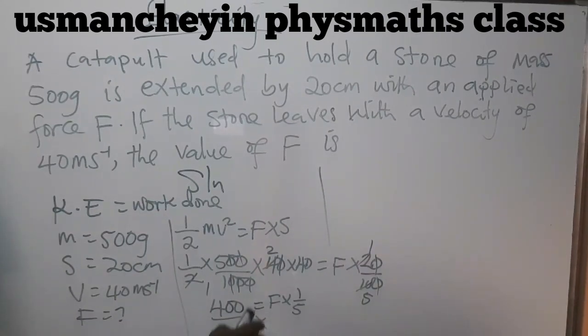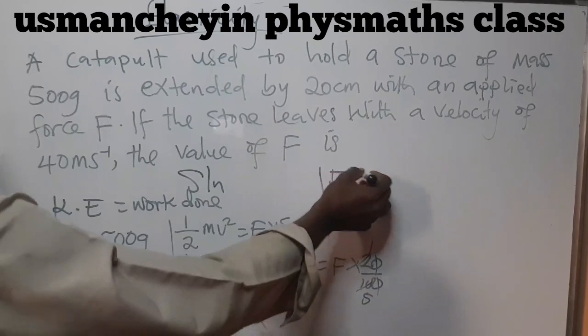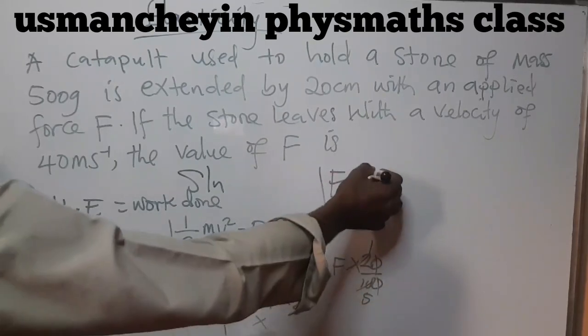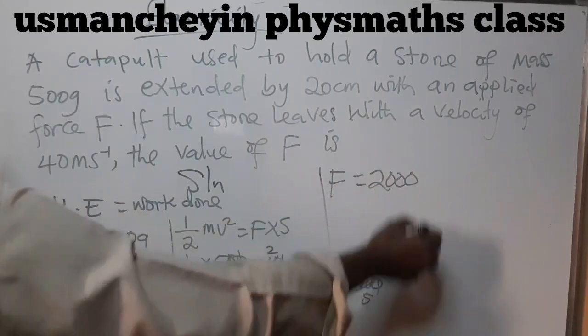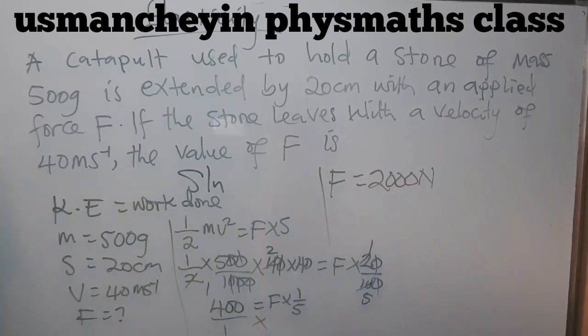Five will multiply this. So F will be equal to five times 400 is 2000 Newtons. So my answer is 2000 Newtons. And that is my final answer.